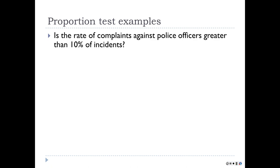Here are some examples of how proportion tests are phrased. Is the rate of complaints against police officers greater than 10% of all incidents police officers respond to? This is a single sample proportion test. The null hypothesis is that the proportion should be .10. You collect data, take the number of complaints divided by the total incidents, and that proportion will differ from 10% to some extent. You then do a one-tailed proportion test to determine if it's more different than expected.